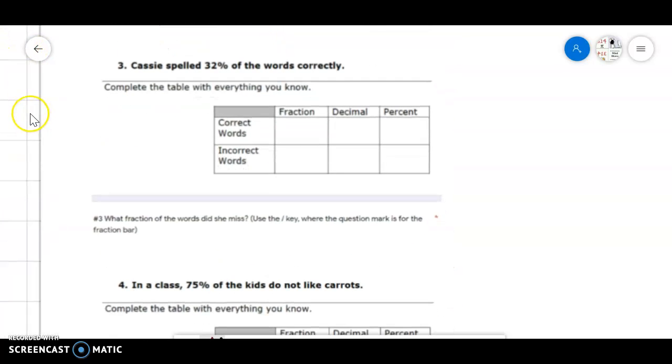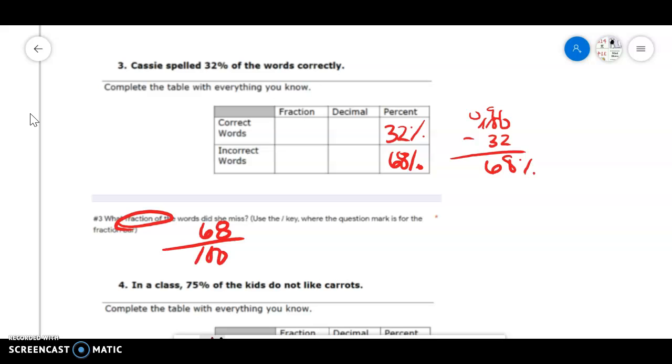32% of the words were spelled correctly. Well, I know that a whole is 100%. So if I borrow, then I have 68% left. But they wanted that as a fraction. So a lot of you told me 68% over 100%, which was great. But we need to be able to simplify that.